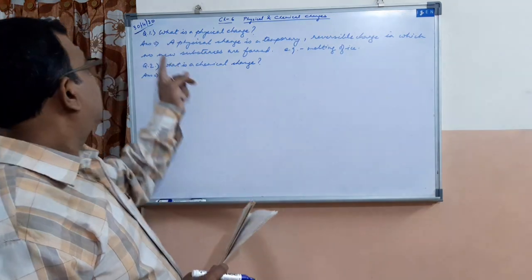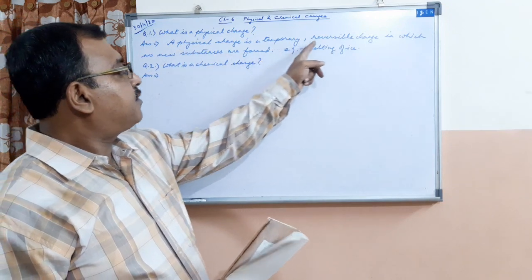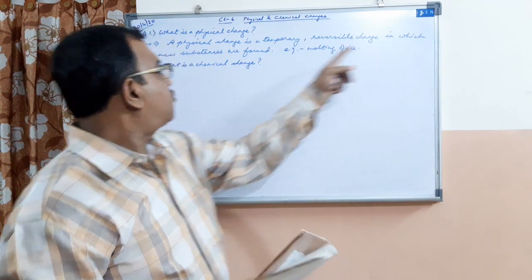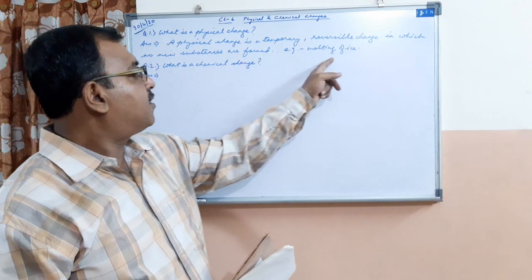So here is the first question. What is a physical change? A physical change is a temporary reversible change in which no new substances are formed. Example: melting of ice.